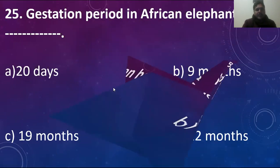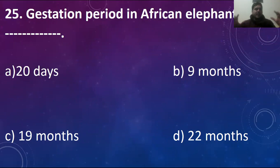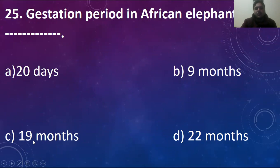Gestation period in African elephants is above blank. Gestation period is the time when the embryo is developed in the mother's womb. The gestation period in African elephants is the longest of any mammal, at about 19 months. The shortest is in mice, at only 20 days. This covers all the mammals that exist throughout the world. Thank you very much. Inshallah I will give another presentation soon. Allah Hafiz.